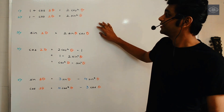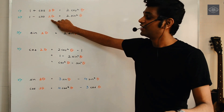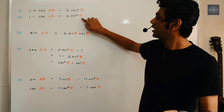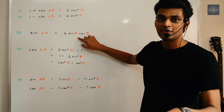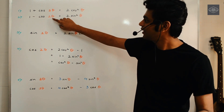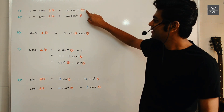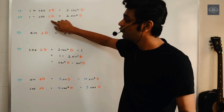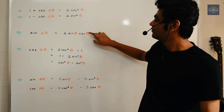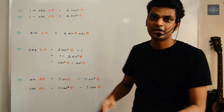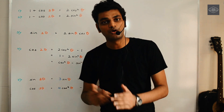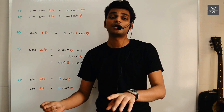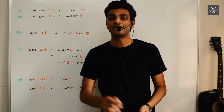Gaur kijiye — whatever angle we have on the left-hand side, uska exact half angle aapko likhna hai on the right-hand side. So if left-hand side pe 2θ hai, to right-hand side pe we write only θ. Agar left-hand side pe 4θ hota, to right-hand side pe we have to write 2θ, and so on.